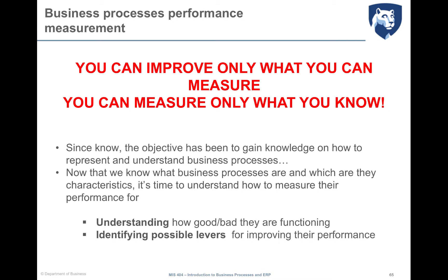Understanding the approaches of business process performance measurement is very important because the objective of mapping and modeling is the possibility to identify potential improvements for our processes. In order to identify this type of improvement, you should rely on numbers. That's why there is a very strong statement saying that you can improve only what you can measure.